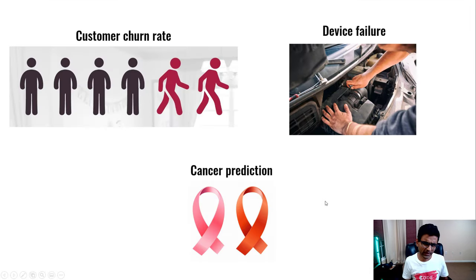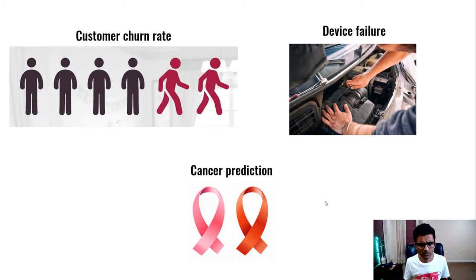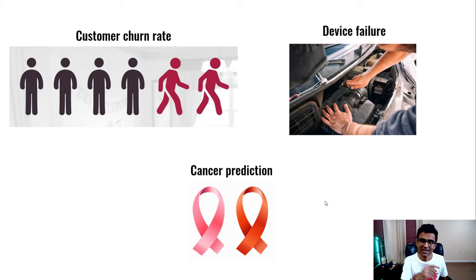Some real-world examples of imbalanced classes include: customer churn prediction, where when a company is stable and providing good service the churn rate is very low; device failures, where IoT devices sending continuous data have a pretty low failure rate; and cancer prediction, where out of 10,000 patients maybe only five will have cancer. Let's start Python coding now.